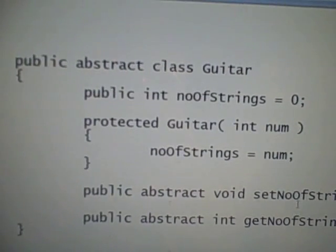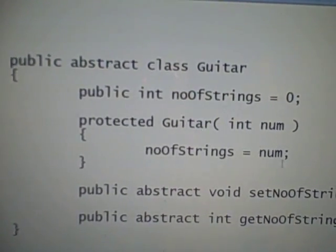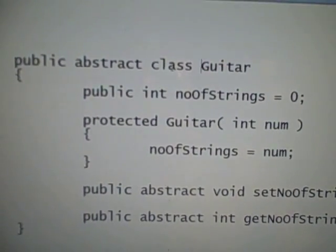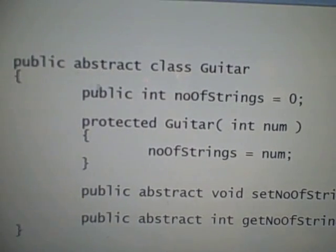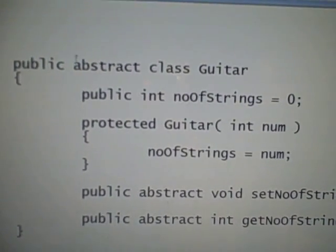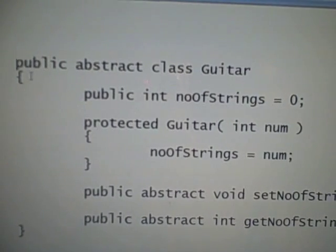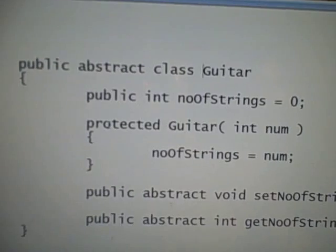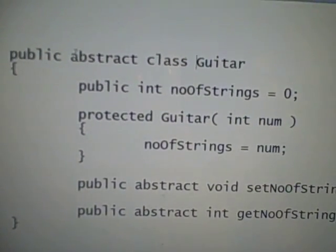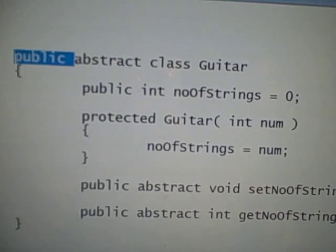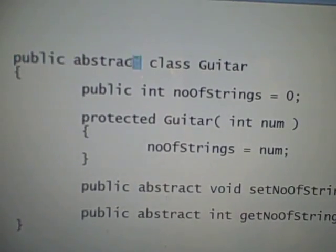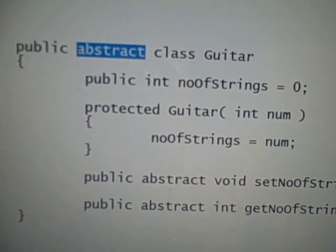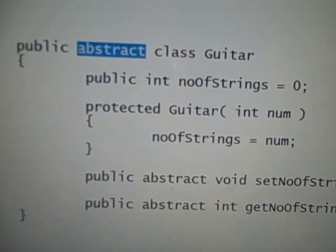I've already defined an abstract class named Guitar, and I'm going to explain what abstract class is with this already defined class that I have. This is the keyword that indicates that whatever class we are defining is going to be an abstract class.